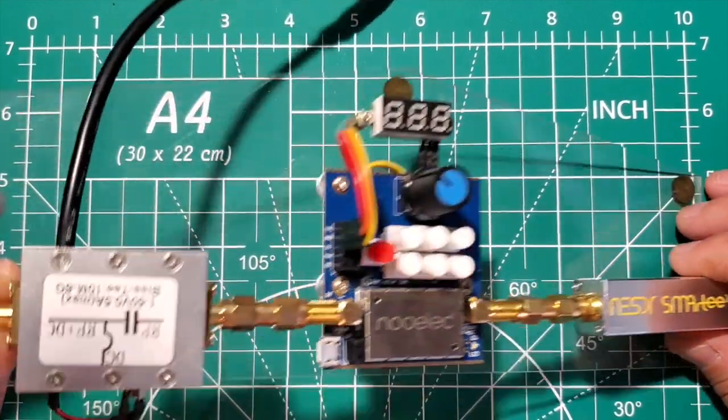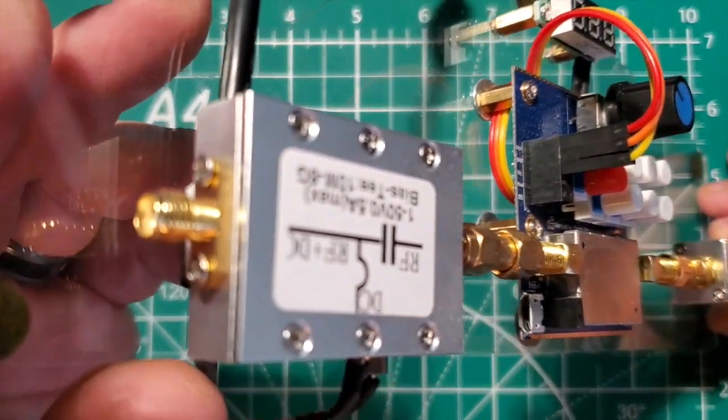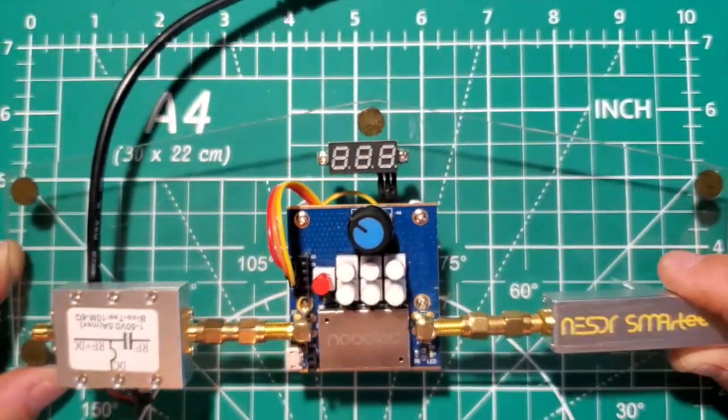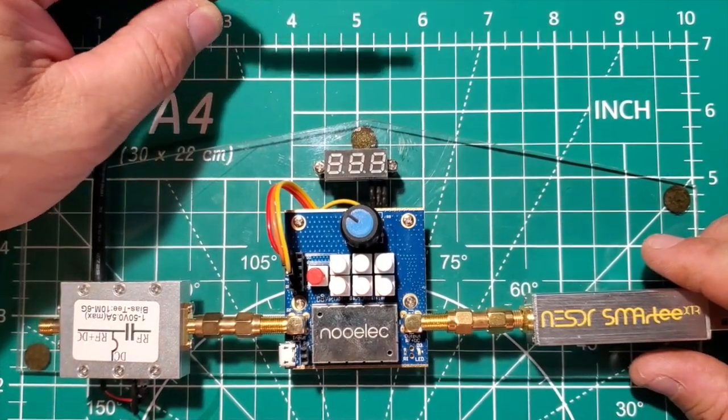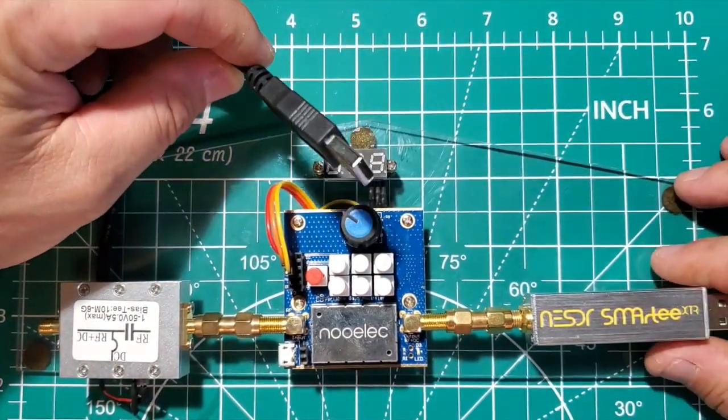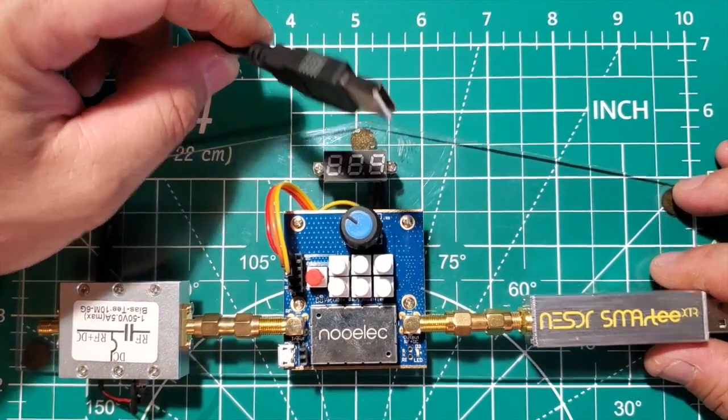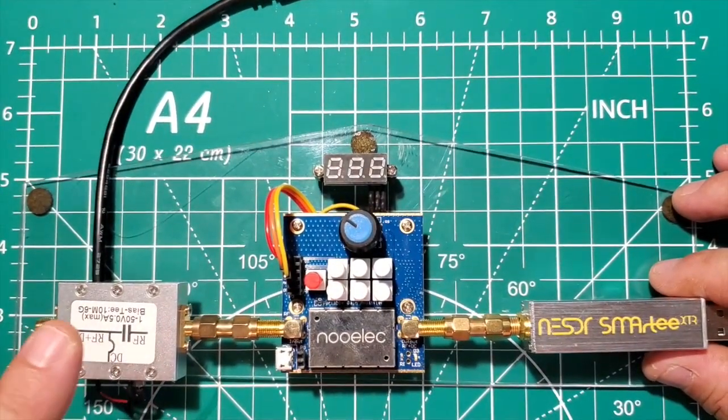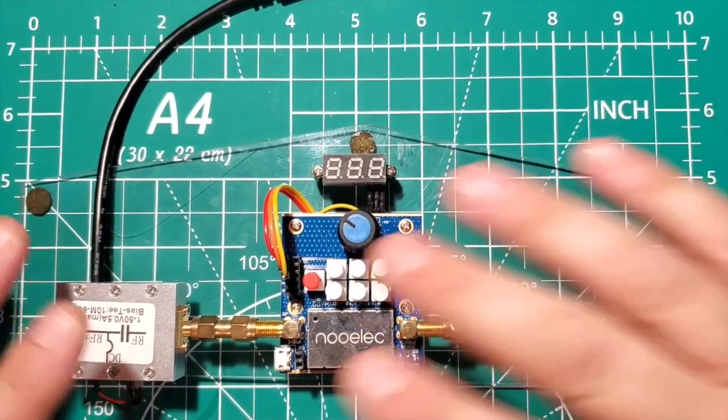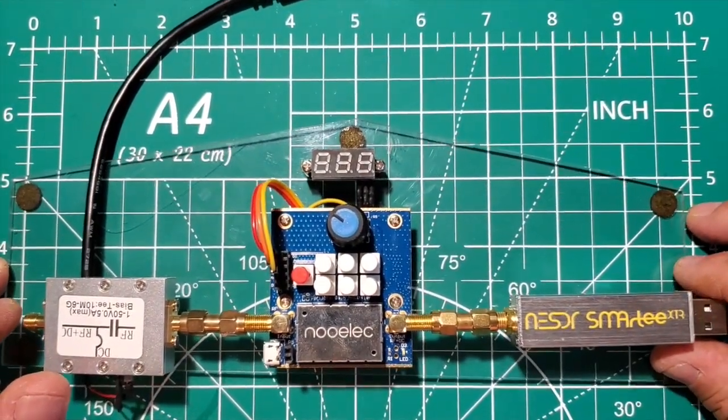So we have the SMA connector. I just use a battery pack to power the bias-T.